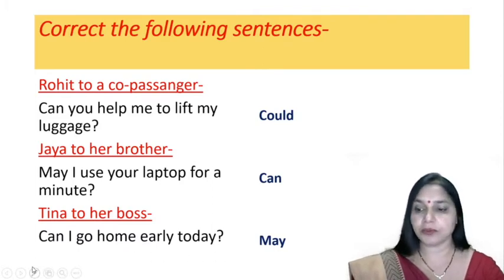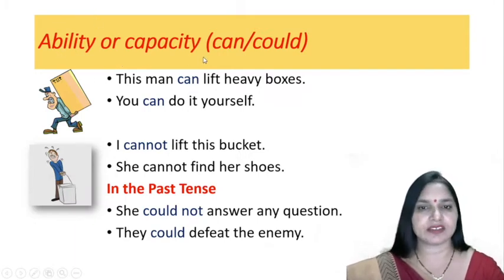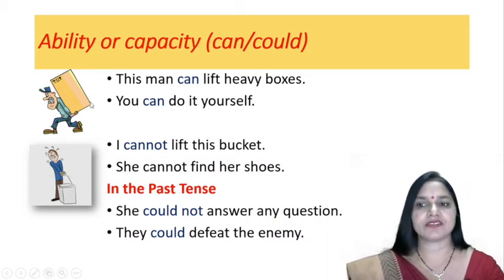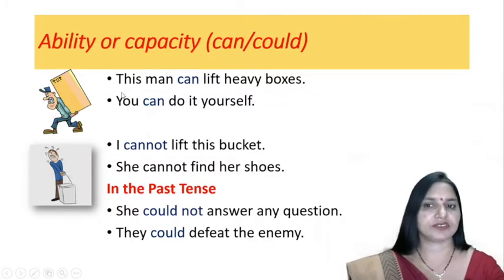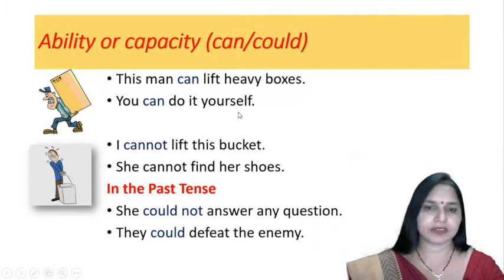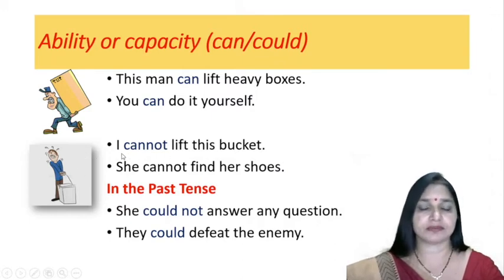Now, to express ability or capacity, we use 'can' or 'could.' You see in the picture the man is lifting a very heavy box — we say, 'This man can lift heavy boxes.' He has the ability to lift heavy boxes. 'You can do it yourself' — that means you also have the ability to do something yourself. In another picture, a man is trying to lift a bucket. He says, 'I cannot lift this bucket' — meaning he does not have the ability to lift it.